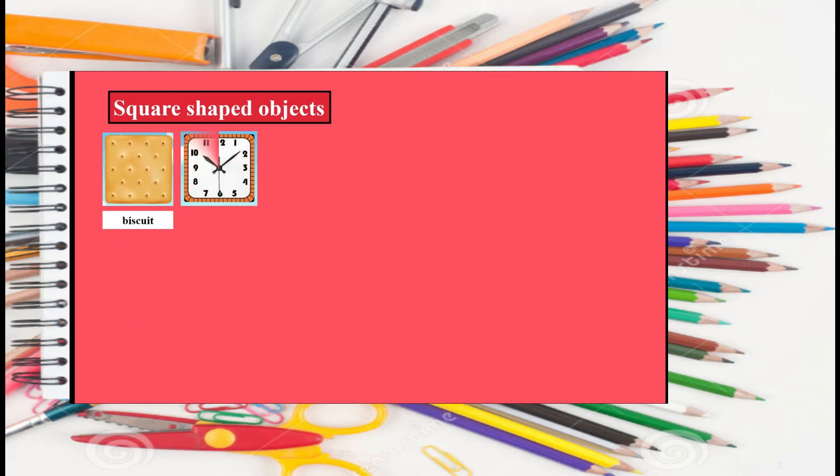Let's see the examples of square shaped things. What's this? It's a door. What's this? It's a door.